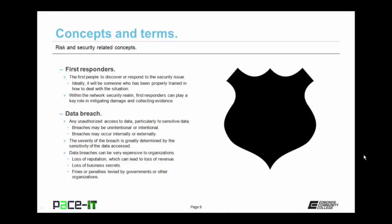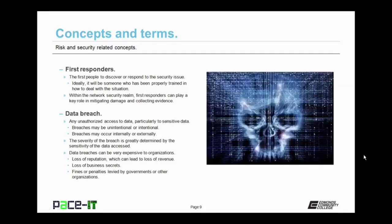First responders are the first people to discover or respond to a security issue. Ideally, it will be someone who has been properly trained in how to deal with the situation. Within the network security realm, first responders can play a key role in mitigating damage and collecting evidence. Then there's the concept of a data breach, which is any unauthorized access to data, particularly sensitive data. Breaches may be unintentional or intentional. They may also occur from inside the network, or they may originate from an external source.